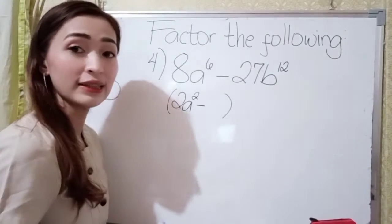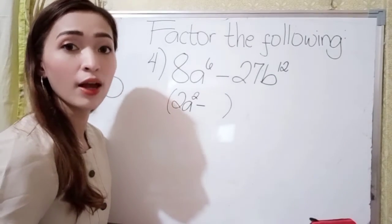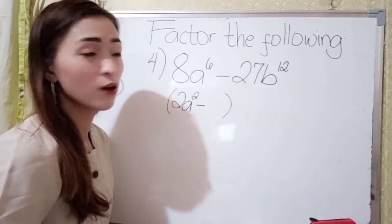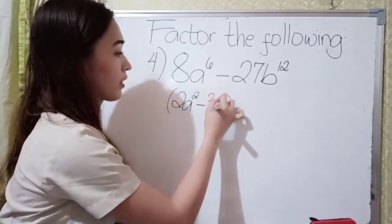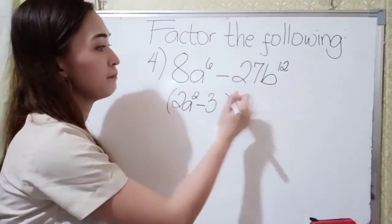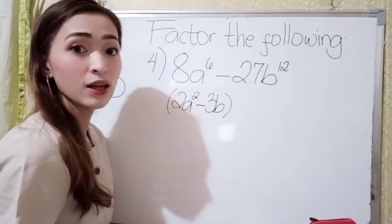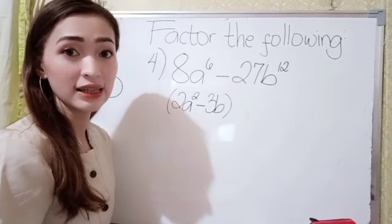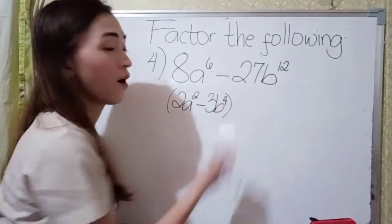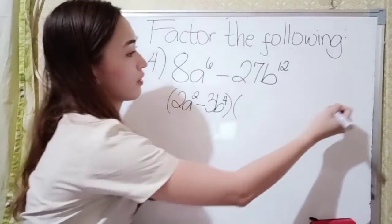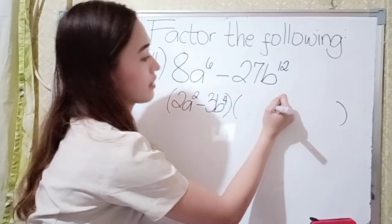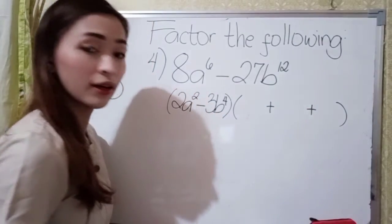What is the cube root of 27? Think of a number that if you multiply it thrice by itself — the answer is 27. So, that is 3, because 3 times 3 is 9, and 9 times 3 is 27. Now we have b here, so just write b. The exponent: divide it by 3 — 12 divided by 3 is 4. Since this is negative, just write positive here and also positive here.